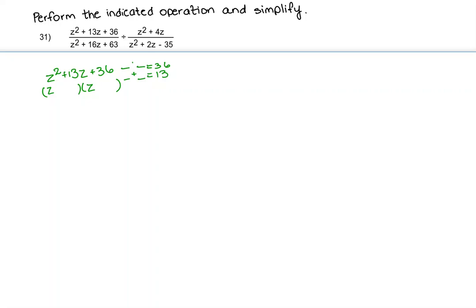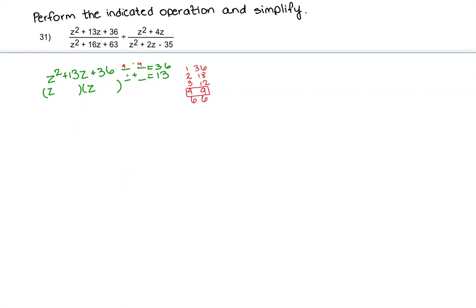The factors of 36 are 1 and 36, 2 and 18, 3 and 12, 4 and 9, and 6 times 6. We're looking for two factors that also add to equal 13, so those two factors are going to be 4 and 9. I'll write those in and double check by multiplying these two together and adding them to see if that equals the middle term — which it does. So the factored form of my first numerator is (z + 4)(z + 9).